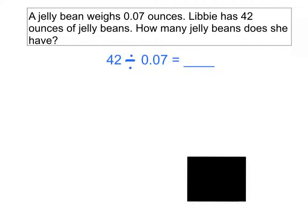Problem number 3. This is our final one for today. A jelly bean weighs 0.07 ounces. Libby has 42 ounces of jelly beans. How many jelly beans does she have? So, here's our equation. We're taking a total amount, 42 ounces, and we're dividing that by the weight of each jelly bean, which is 7 hundredths. And we're trying to figure out how many beans does she have in all. So, let's turn it into multiplication. That might help us. And if we do that, we're going to have blank times 0.07 equals 42.